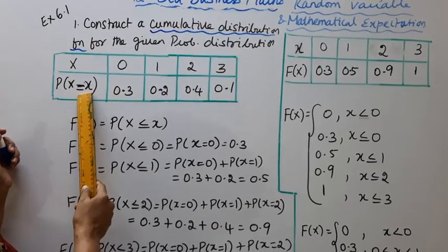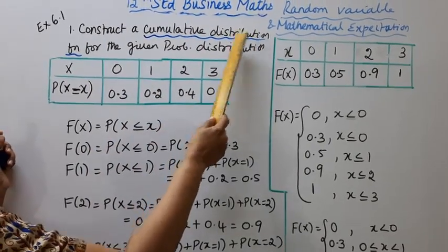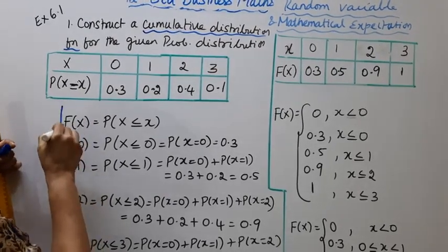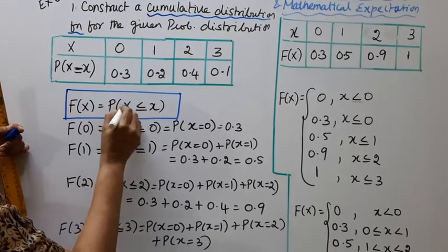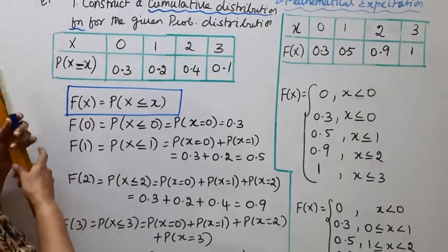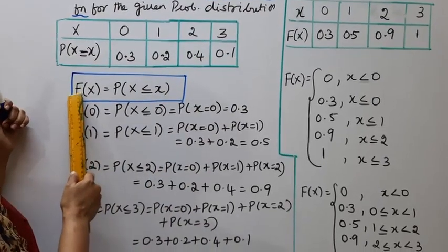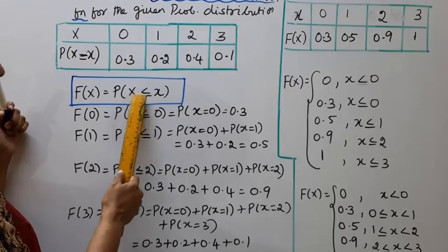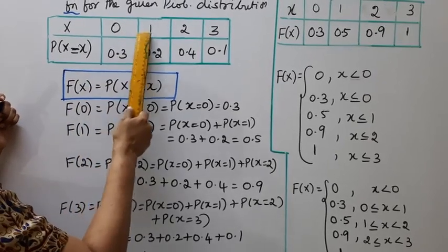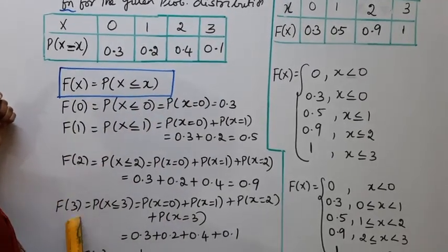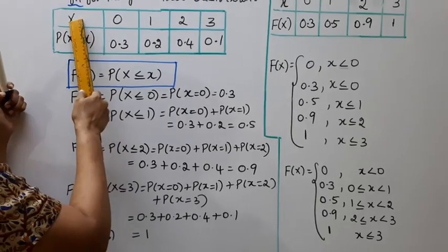In the table, column constructed for cumulative distribution. The cumulative distribution condition is: F of x equals P of capital X less than or equal to small x. The cumulative distribution column for X values 0, 1, 2, 3 — we construct F(0), F(1), F(2), F(3).